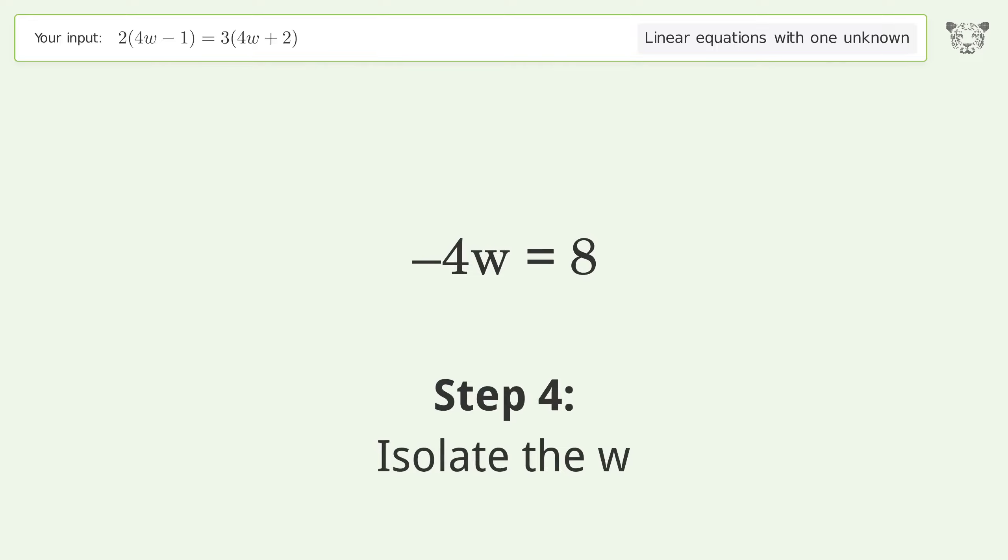Isolate the w. Divide both sides by negative 4. Cancel out the negatives.